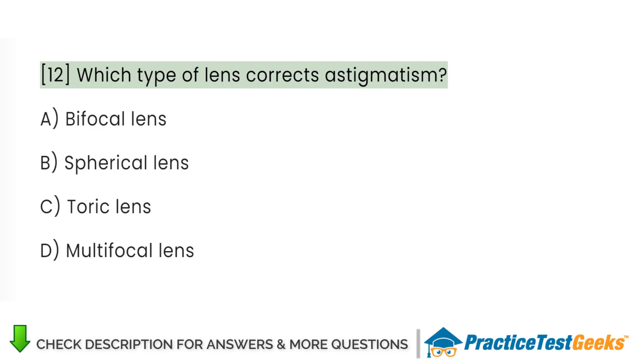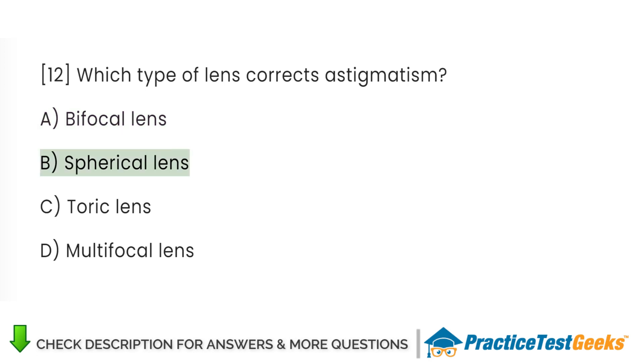Which type of lens corrects astigmatism? A. Bifocal lens. B. Spherical lens.